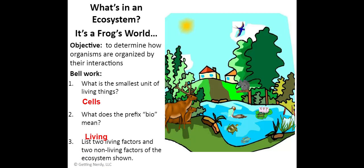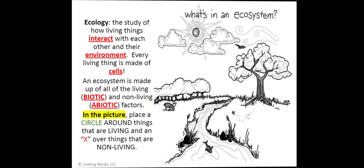List two living factors and two non-living factors of the ecosystem shown. We know if something is living — for example, that cute little squirrel, or Myrtle the turtle, or Freddy the frog, or that fantastic tree. Non-living things include your rock, which most likely isn't living, and that house over there — even though you live in it, it is not living itself.